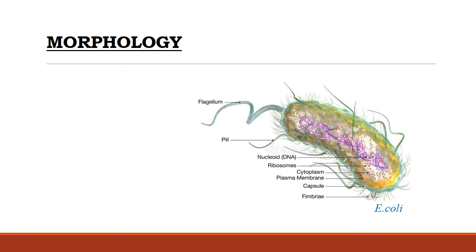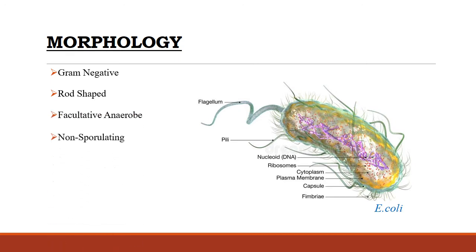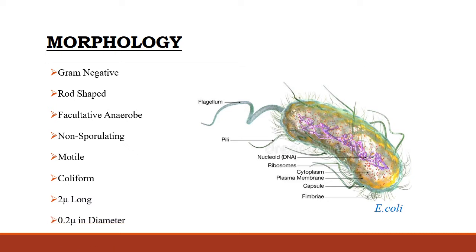Morphology: E. coli are gram-negative, rod-shaped, non-sporulating, facultative anaerobes, as they can grow in both the presence or absence of oxygen. They are motile because they have flagella to move. They are coliforms and spread through fecal contamination. They measure 2 micrometers in length and 0.2 micrometers in width.